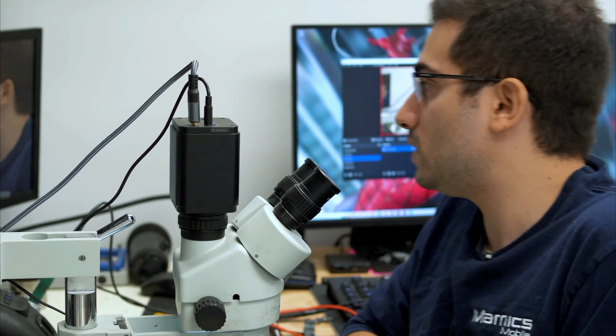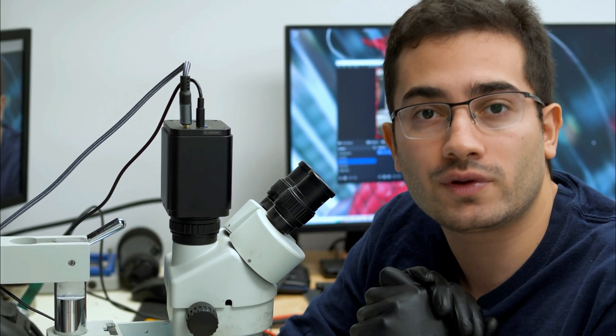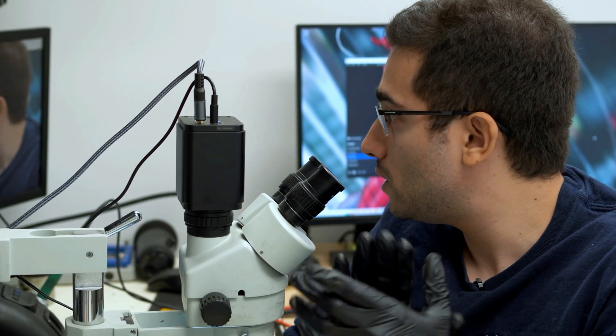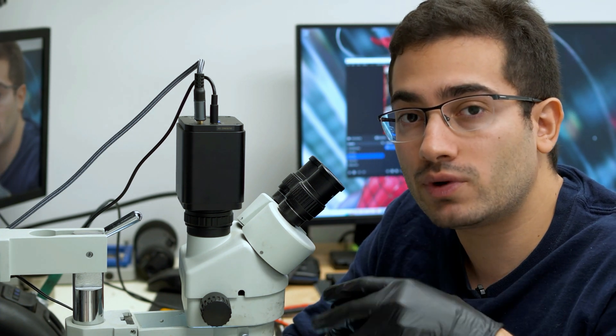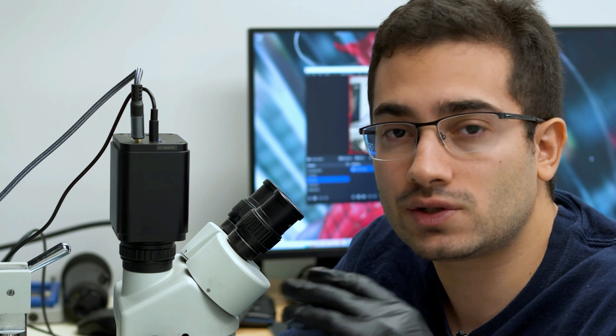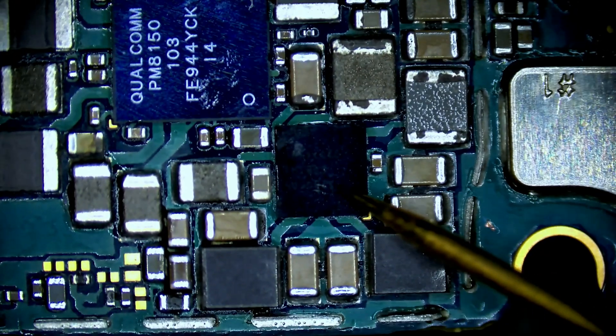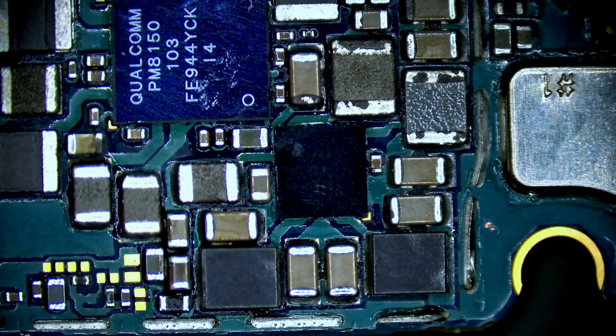Alright, so we repaired the connections on the FPC connector for the screen. We still have no image. I'm going to take a closer look at the connector and neighboring components, filters, resistors, if there's anything that looks off. I might go ahead and just replace the display IC.